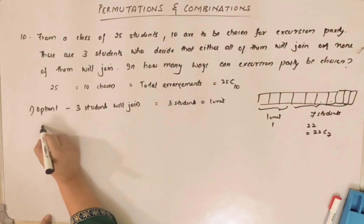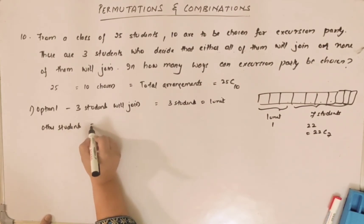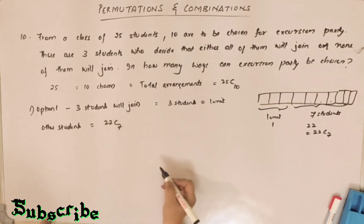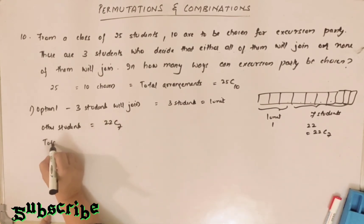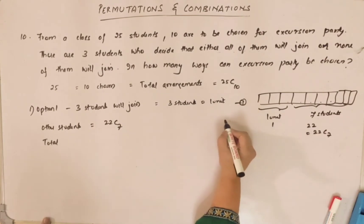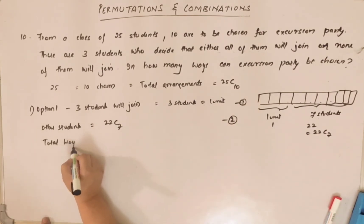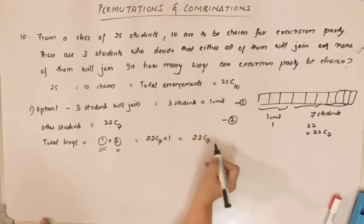So other students would be 22C7. So total, what will be the total number of ways? We'll have to take 1 into the number of combinations possible for other students. So that will be 22C7 into 1, which is 22C7 itself.